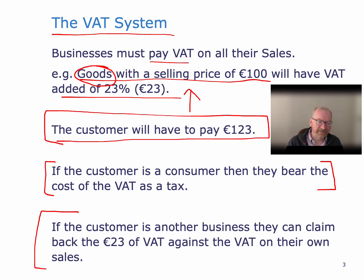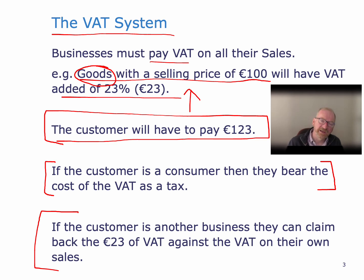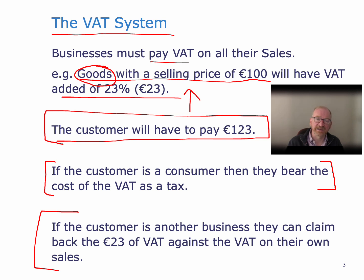If the customer is another business, then things are slightly different. They can claim back the VAT that they have paid on their purchases and expenses from, or set it against, the VAT that they're paying on their sales. So they will claim back that €23 of VAT as what we call an input credit against the VAT that they pay on their sales. We'll now see how this works through the value chain.